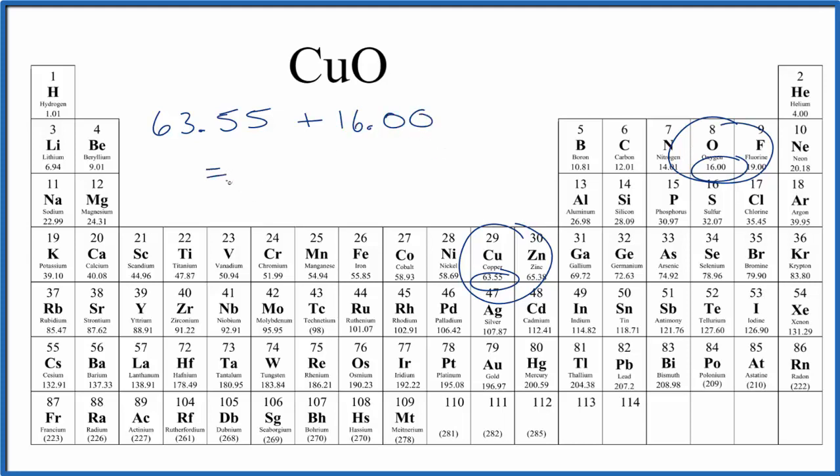When we add these together, we get 79.55, and the units are grams per mole. And what that means is if we have one mole of copper 2 oxide, you'll have a mass of 79.55 grams. Or if you're given 79.55 grams of copper 2 oxide, it'll be 1 mole.